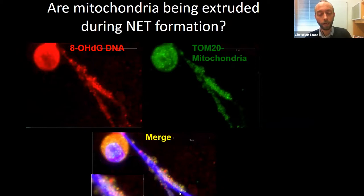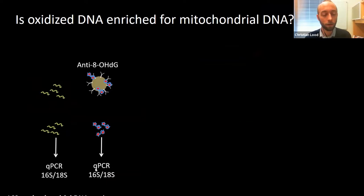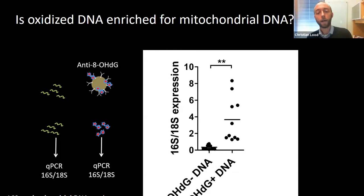We confirmed this by developing a novel technology isolating oxidized DNA by immunoprecipitation, then quantifying the relative abundance of mitochondrial and genomic DNA using qPCR — using 16S for mitochondrial DNA and 18S for genomic DNA. Consistent with the microscopy, oxidized DNA was highly enriched for 16S, confirming it is primarily of mitochondrial origin. But why does it matter whether the DNA is genomic or mitochondrial, oxidized or non-oxidized?